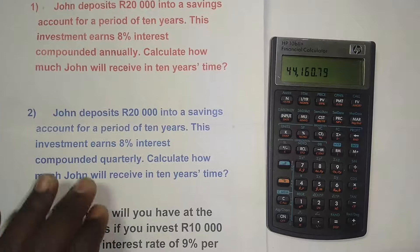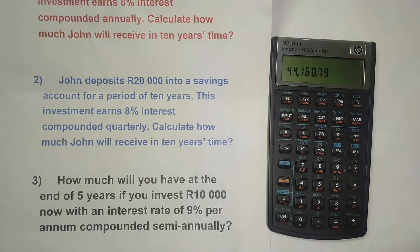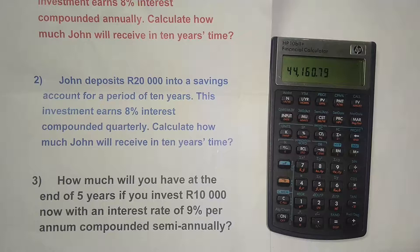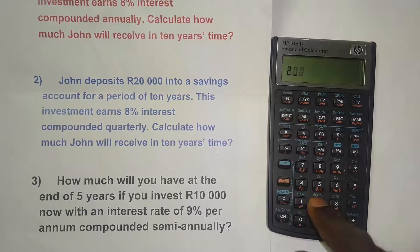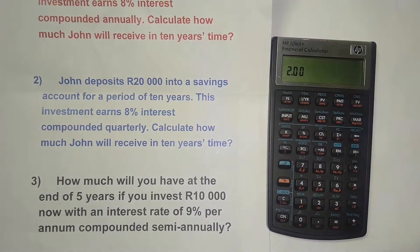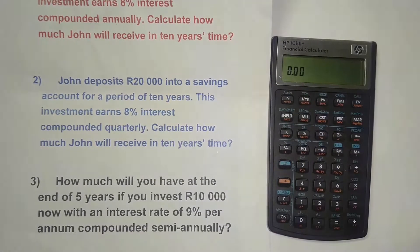Now the third example: How much will you have at the end of 5 years if you invest 10,000 rand right now at an interest rate of 9% per annum compounded semi-annually? This time it's semi-annual compounding. Press the orange button and C — you can see it's currently 4 per year. Semi-annually means twice per year, so press 2, press the orange button, press PMT. It has now changed to 2 per year.